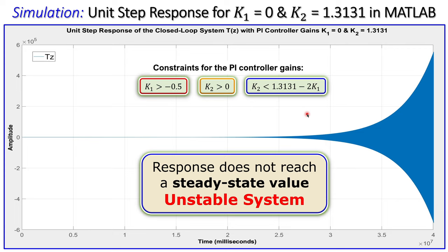This example specifically addressed determining PI controller gains k1 and k2 for a stable discrete-time system. We determined the stability conditions, drew the stability region, and verified using MATLAB simulations that our calculations are correct. If you have any questions or comments about this example, please let me know. Don't forget to like and share this video - thanks for your cooperation and see you next time.